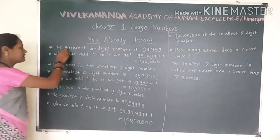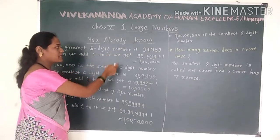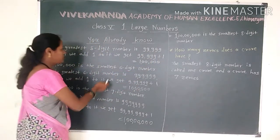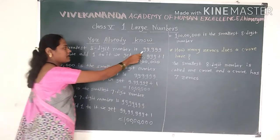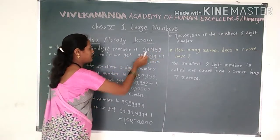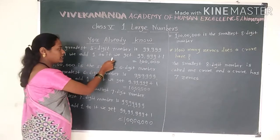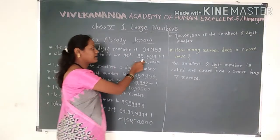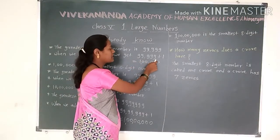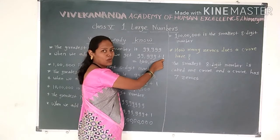You already know the greatest 5-digit number is 5 times 9, which means 99,999. When we add 1, we get 99,999 plus 1.